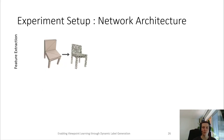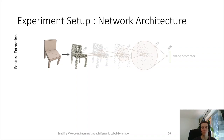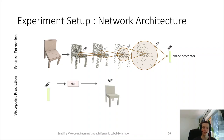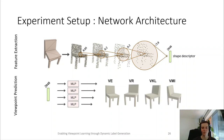To predict viewpoints from the models, we first sample the input models into point clouds, which are then processed by a feature extractor network consisting of hierarchical point convolutions to extract a shape descriptor of the input shape. This shape descriptor can then be evaluated by MLPs to predict viewpoints for the different viewpoint quality measures.